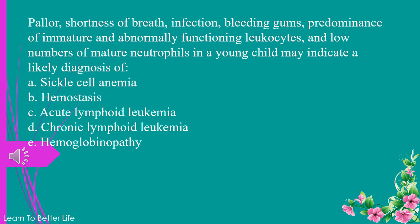Shortness of breath, infection, bleeding gums, predominance of immature and abnormally functioning leukocytes, and low numbers of mature neutrophils in a young child may indicate a likely diagnosis of: a. sickle cell anemia. b. hemostasis. c. acute lymphoid leukemia. d. chronic lymphoid leukemia. e. hemoglobinopathy. The answer is c. acute lymphoid leukemia.